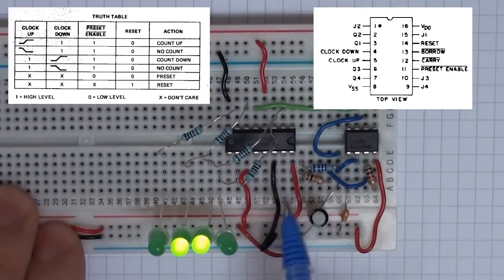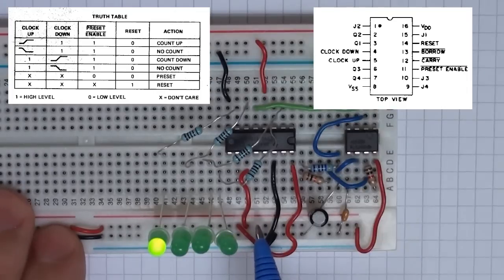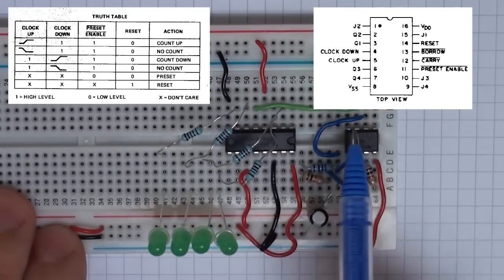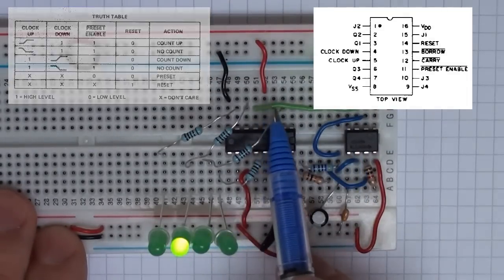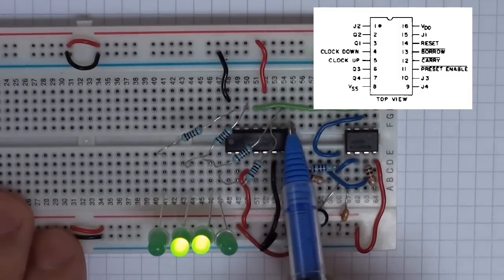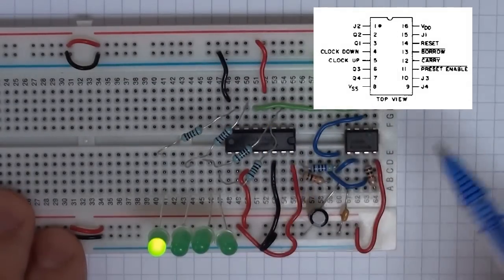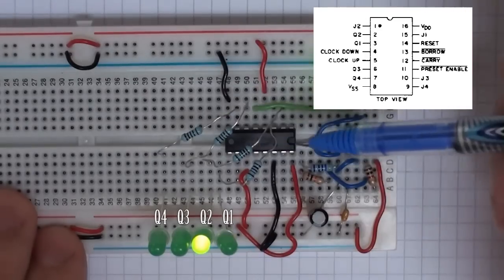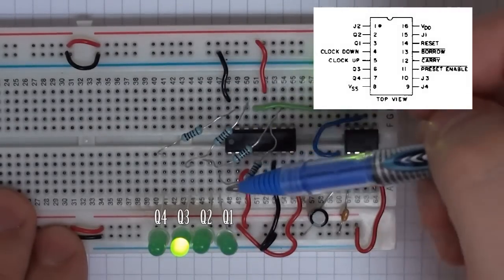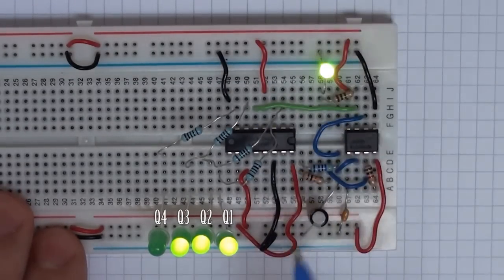So that means that this BCD up-down counter is now in up counter configuration. And every time it receives a pulse, a transition from low to high on the green wire into pin 5, it will count by 1. The outputs then are Q1 to Q4 and I've wired them across with the resistor to an LED to ground. And here you can see the count.